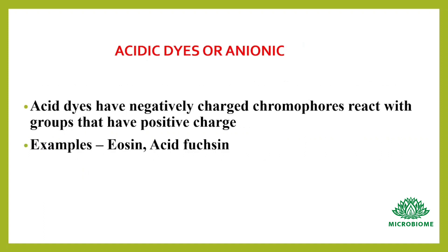Next, acidic dyes or anionic. These acid dyes have negatively charged chromophores that react with groups that have a positive charge. Examples are eosin and acid fuchsin.